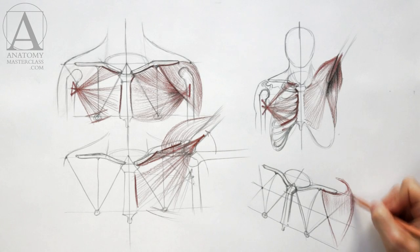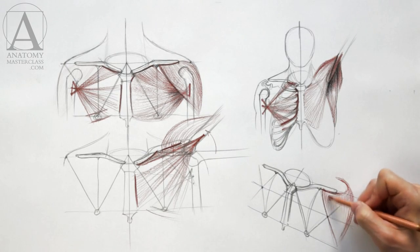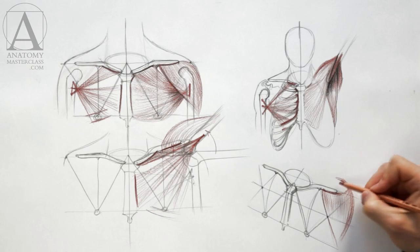In red pencil, I will indicate the shape of the deltoid. It covers the shoulder from the front, side, and back.